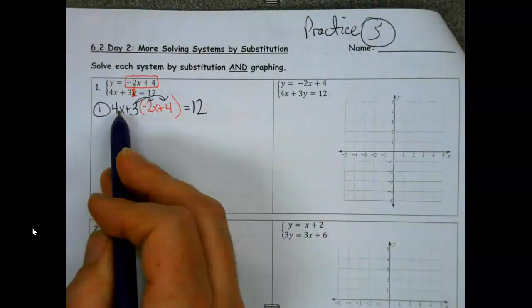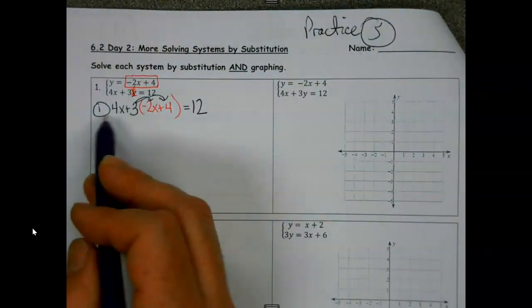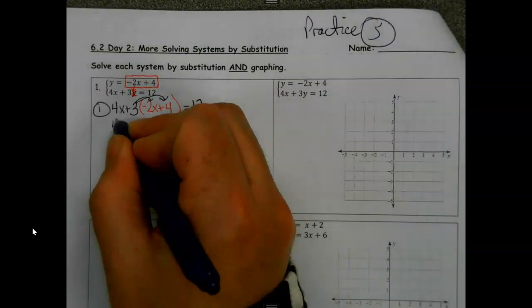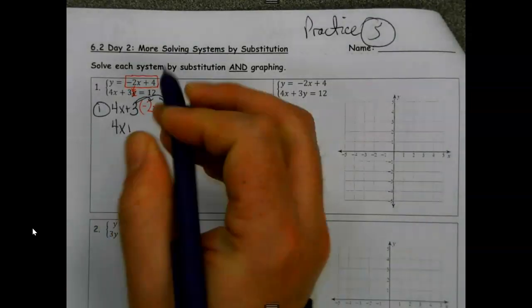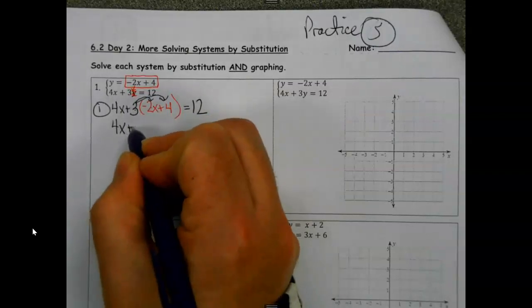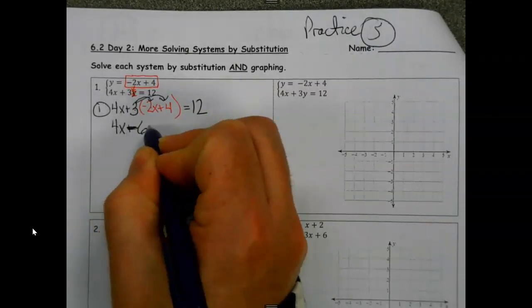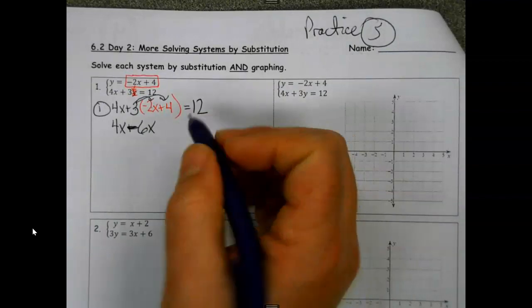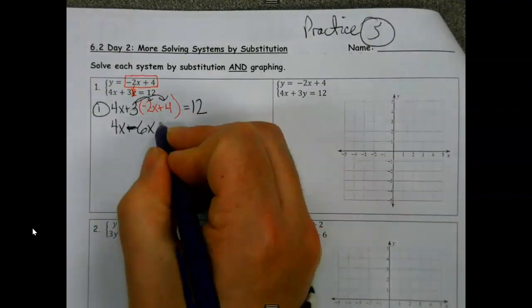Now, once we've got that plugged in, this time I actually have a number I get to distribute. So we're not distributing the four, we're not combining the four with the three. So I look and I'm like, well, three and negative two, that's not going to be plus, that's going to be negative six. Three times four is 12.